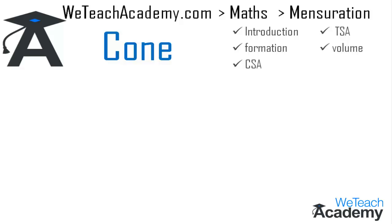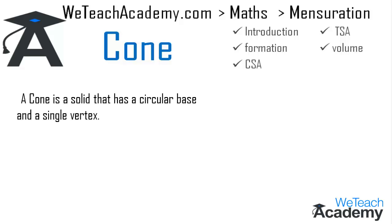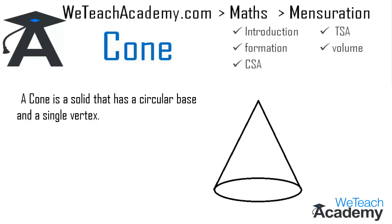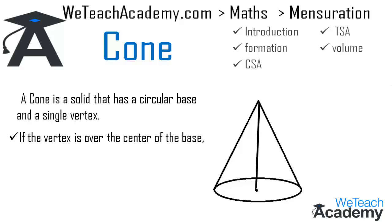Coming to the first section where we are going to define a cone. A cone is a solid that has a circular base and a single vertex. Here in the diagram you can observe an object which has a single vertex and a circular base — this object is called a cone. If the vertex is over the center of the base, then such a cone is called a right cone.